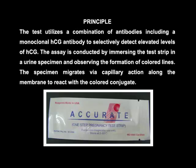Principle: The test utilizes a combination of antibodies, including a monoclonal HCG antibody, to selectively detect elevated levels of HCG. The assay is conducted by immersing the test strip in a urine specimen and observing the formation of colored lines. The specimen migrates via capillary action along the membrane to react with the colored conjugate.